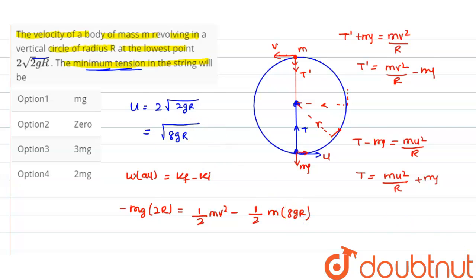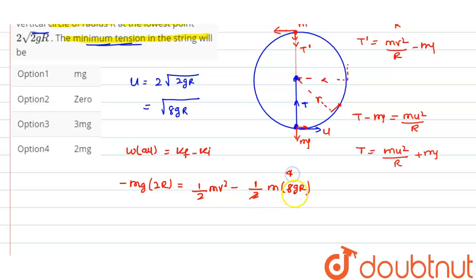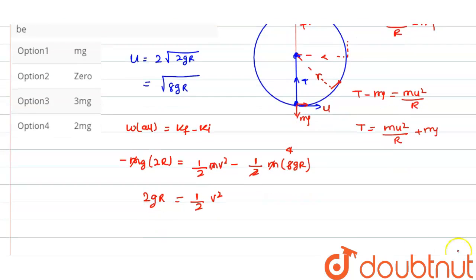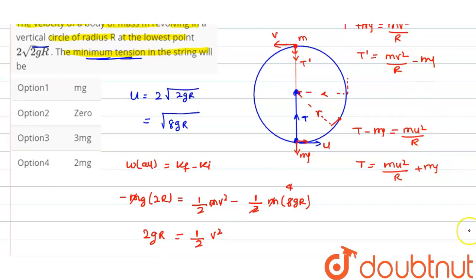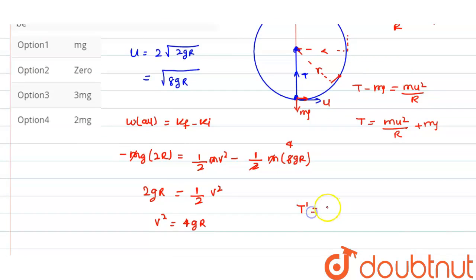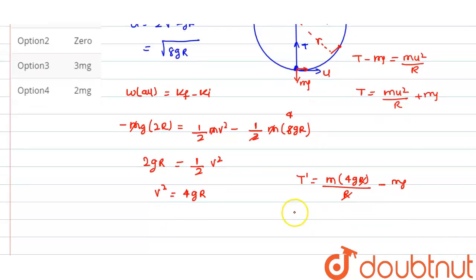Since the initial velocity u² = 8gr, substituting: −2gr = ½v² − ½(8gr). Cancelling m and simplifying: ½v² = 4gr − 2gr = 2gr, so v² = 4gr. Substituting into the tension formula: T' = m(4gr)/r − mg = 4mg − mg = 3mg. The minimum tension in the string is 3mg.